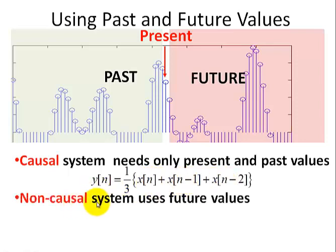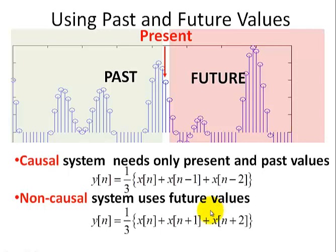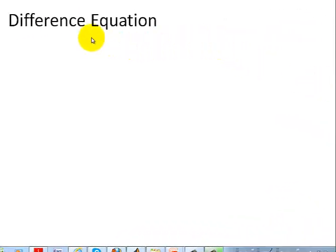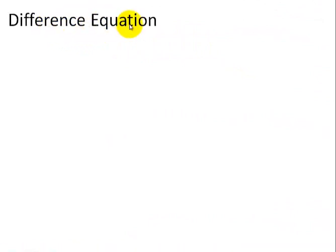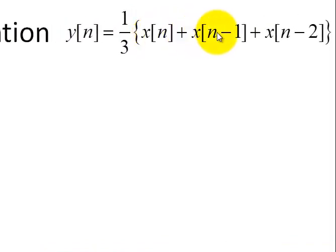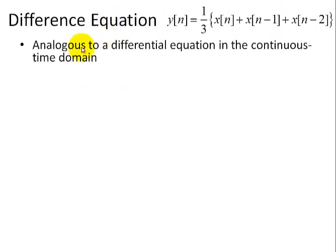A non-causal system uses future values. Here's an example where we have the present value and two future values. The equations for these filters are known as difference equations. For the causal system, we have the present value and the two past values added together and divided by three — our average of these three values. The difference equation is analogous to a differential equation found in continuous time systems.